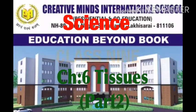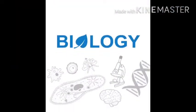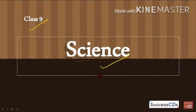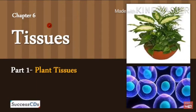In this video I am going to tell you about the plant's permanent tissues. In simple permanent tissue I discuss sclerenchyma in this video, and permanent tissue means the complex permanent tissue about the phloem and xylem tissues. Another permanent tissue is a complex tissue. Complex tissues are made up of more than one type of cell. All these cells coordinate to perform a common function. Xylem and phloem are examples of such complex tissue.